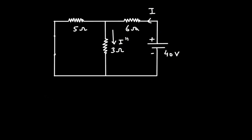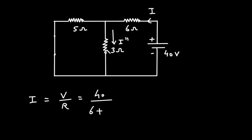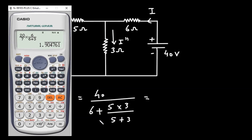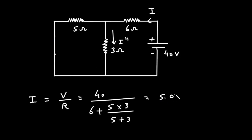First we need to find the value of main current I. Again, I equals V over R. The voltage is 40V and the resistance is 6 Ohm plus the parallel combination of 5 Ohm and 3 Ohm: 5 × 3 divided by 5 + 3. So I equals 40 divided by (6 + 5×3/(5+3)), which is 5.07 ampere.